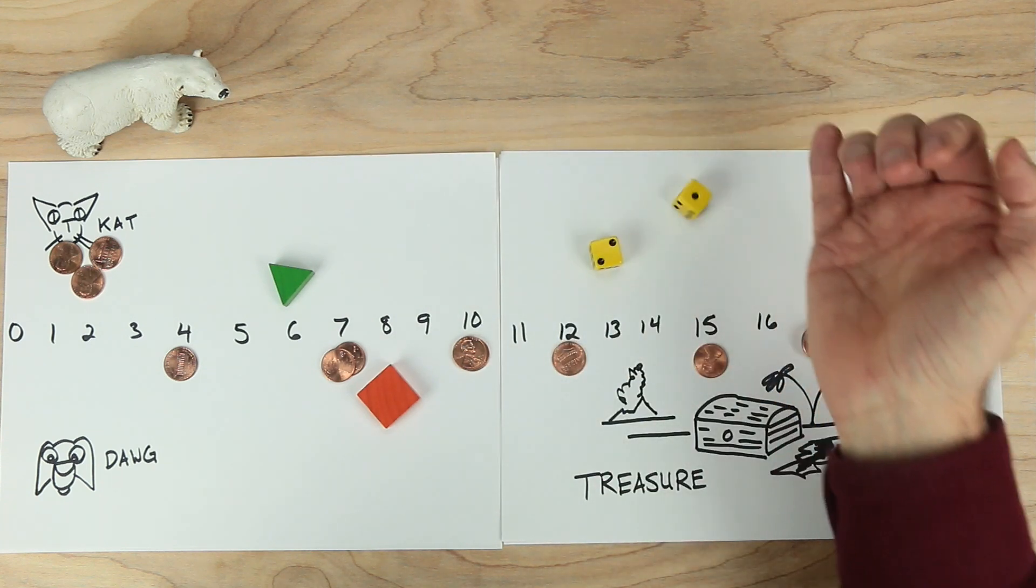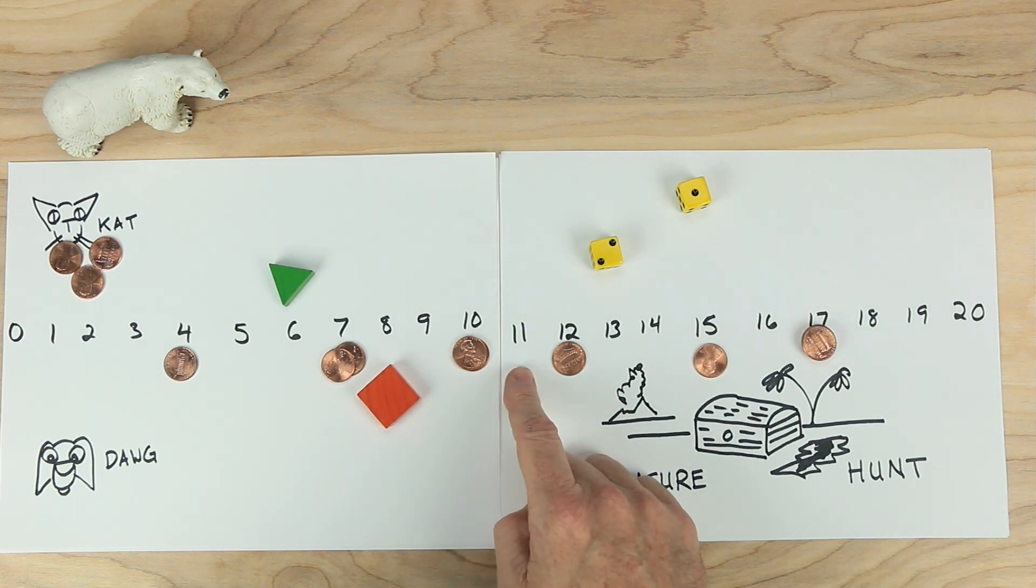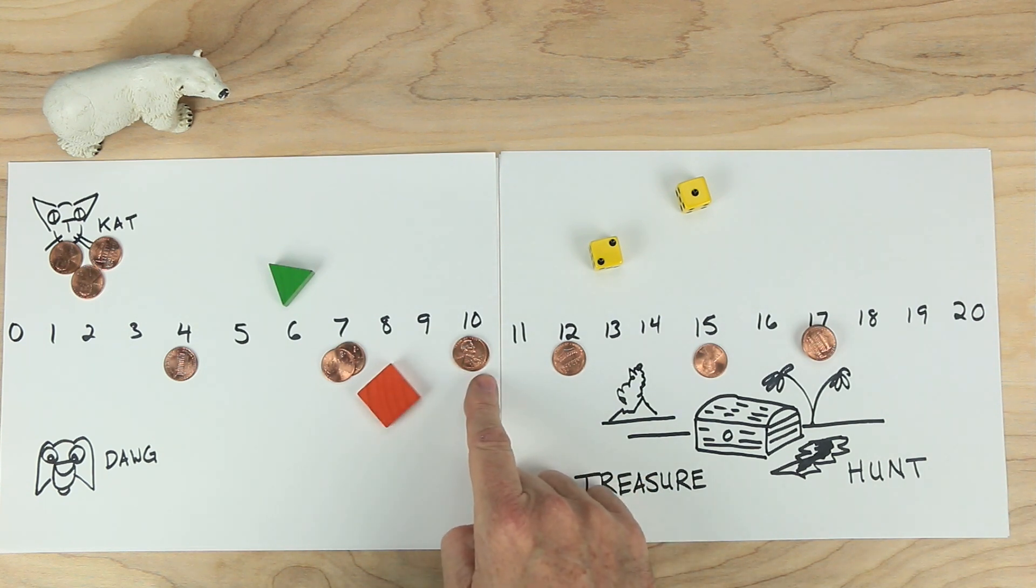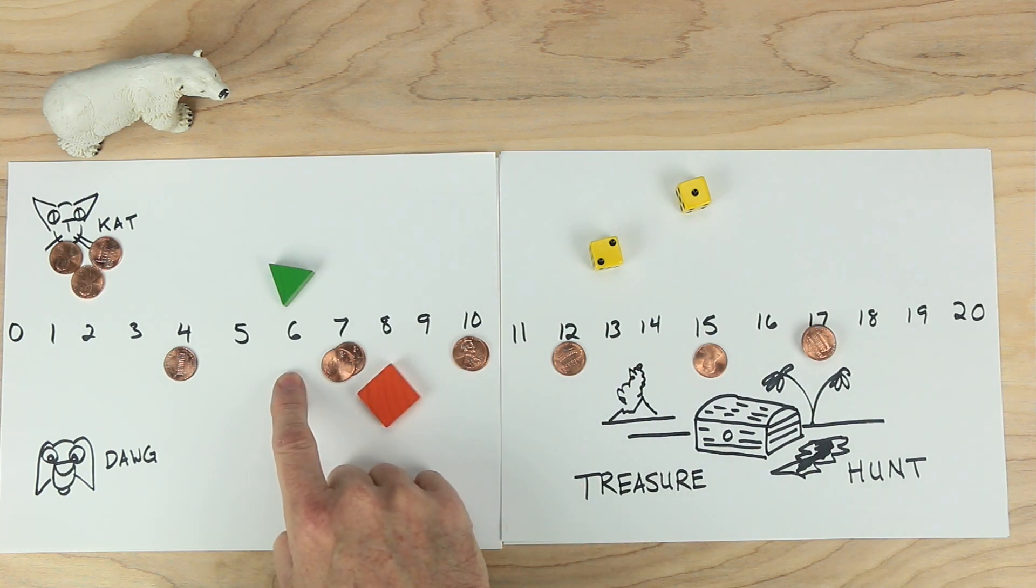It's dog's turn now. Dog rolls a two and a one. So what can dog do? If dog moves forward, one, two, and then one more, there's no treasure. If dog moves two forward, one, two, and one back, no treasure. If dog moves two and one back, one, two, and one gets back to six, no treasure.